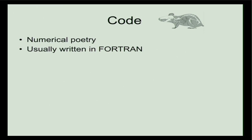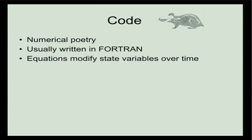For GCMs, the code is usually written in the high-tech and beautiful poetic verse of Fortran, which came of age in the 1970s and hasn't really changed. The code basically takes state variables in the model — for example, in the ocean there's temperature and salinity; in the atmosphere there's moisture content and temperature. The code takes the state variables at one point, then modifies them according to the equations, and updates those state variables.